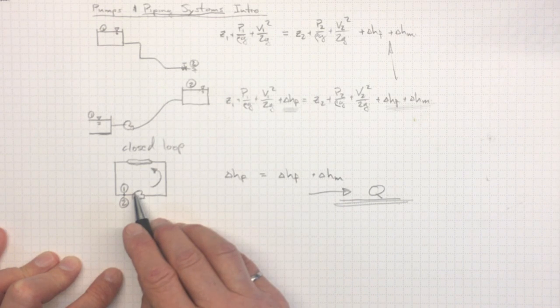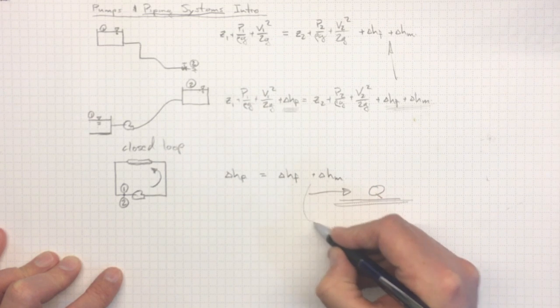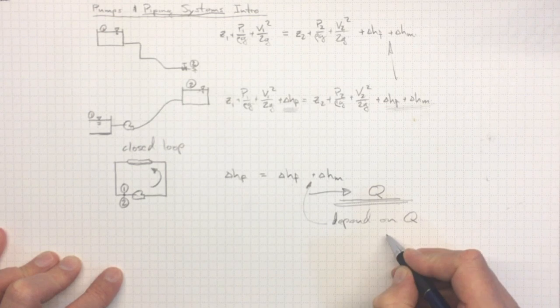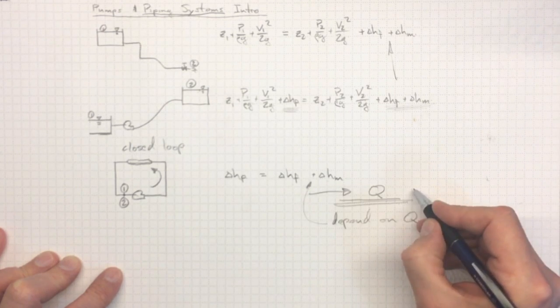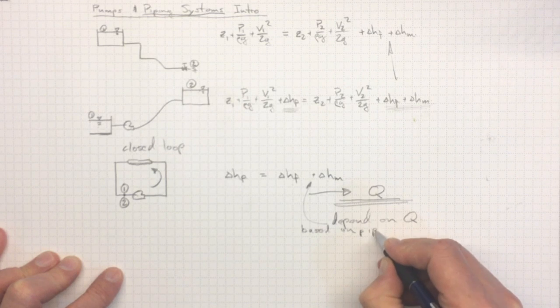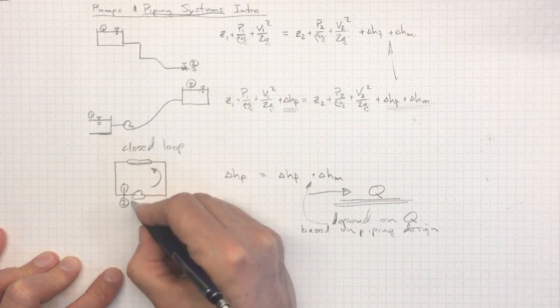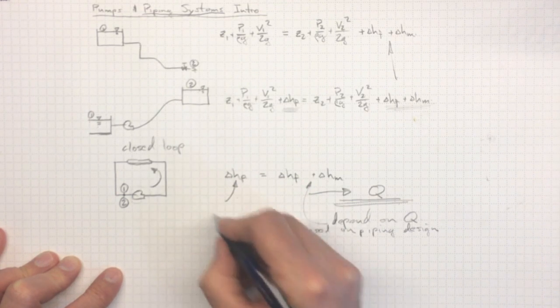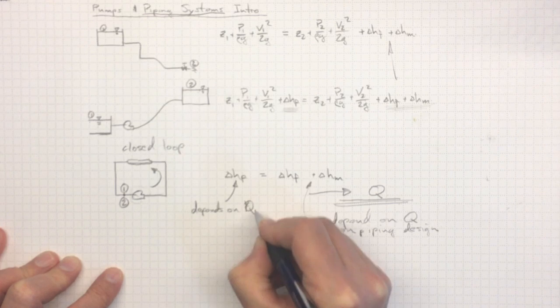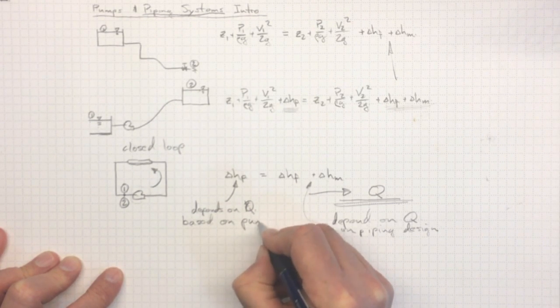Now, we know from the practical section on piping systems that the minor losses and the friction losses, these depend on the flow rate. The higher the flow rate, the higher the losses will be. So they depend on the flow rate based on what the piping design looked like. Over here, when we install this pump, this head rise across the pump, it also depends on the flow rate. And it depends on that flow rate based on the pump design considerations.